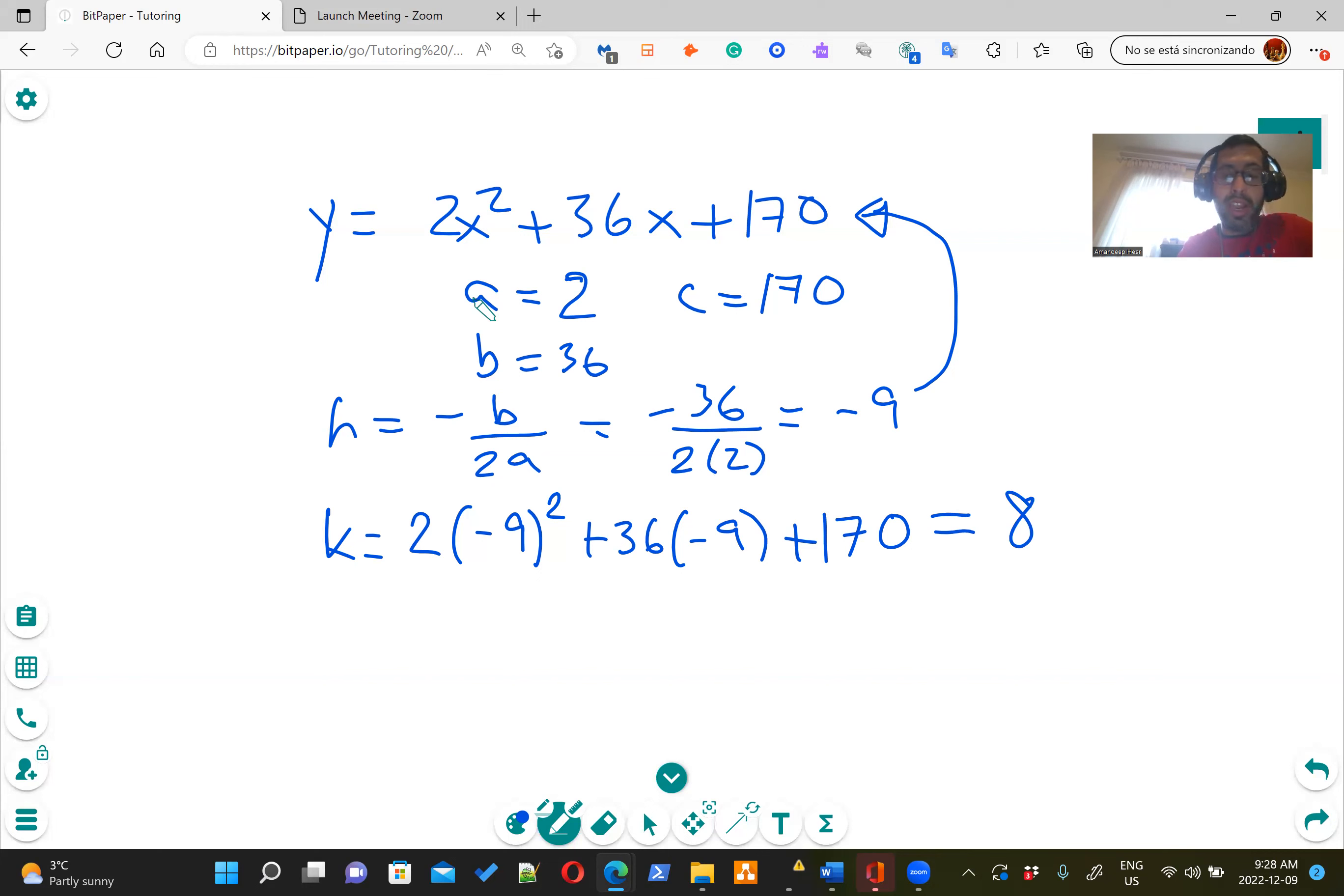So now, if we want to get into vertex form, we know the form is Y equals A times X minus H squared plus K. Here A is 2, so all we do is replace A, H, K by the corresponding numbers. H is negative 9. When you're dealing with a negative, don't forget to put a bracket because a lot of kids forget this part. If we simplify this, a double negative gives you a positive. So this would be X plus 9 squared plus 8. And that's in vertex form.